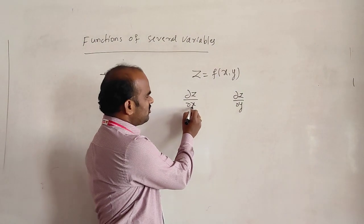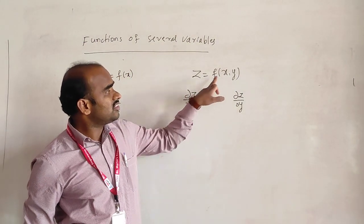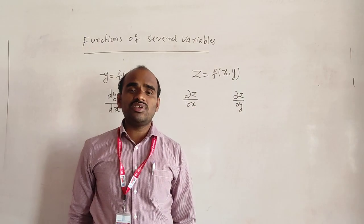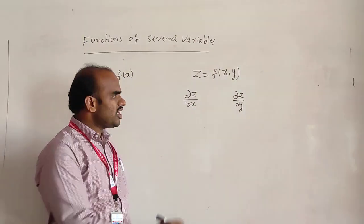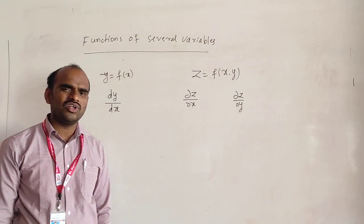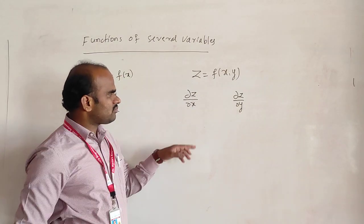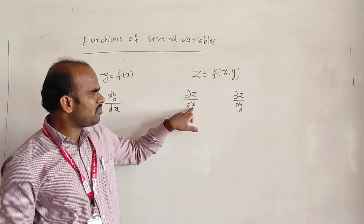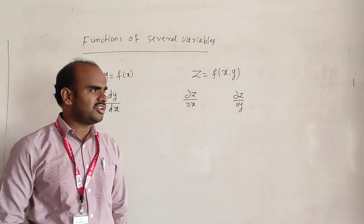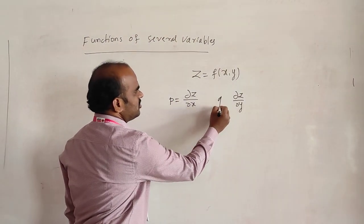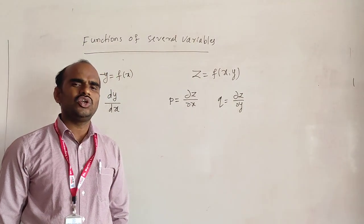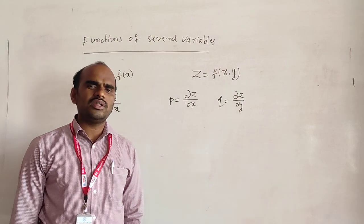When calculating ∂z/∂x, there is no change in y, and similarly ∂z/∂y represents the rate of change of z with respect to y. Here ∂z/∂x is denoted by small p and ∂z/∂y is denoted by small q. These two are called the first-order partial differential operators.